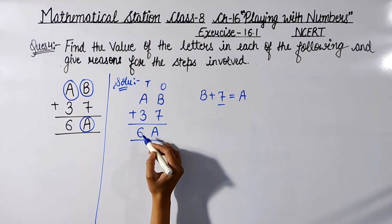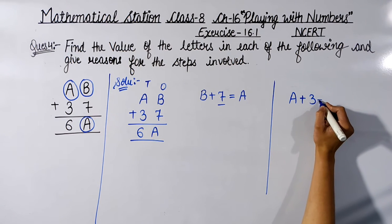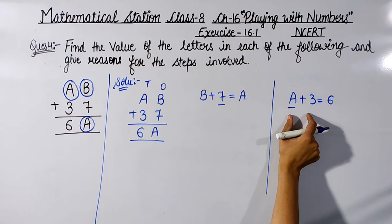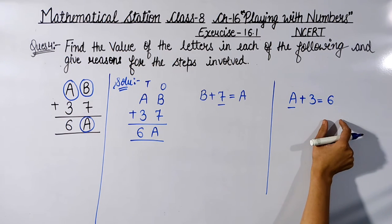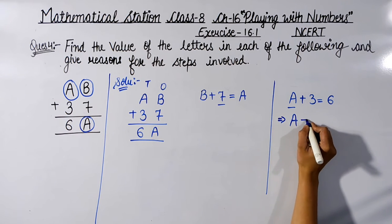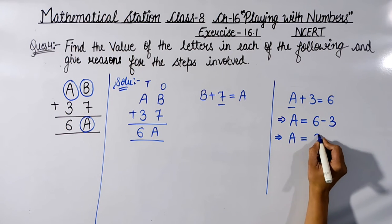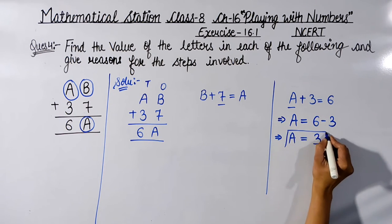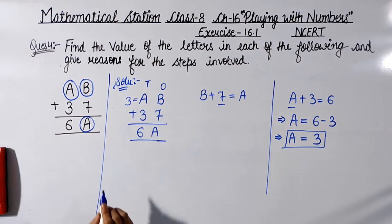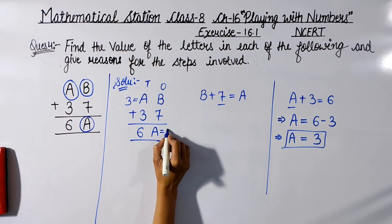Tens column is: A + 3 = 6. To find A, we transfer the constant to the other side — the sign changes on transfer. So A = 6 − 3, which gives A = 3. So A is equal to 3, and this value of A is the same wherever A appears.